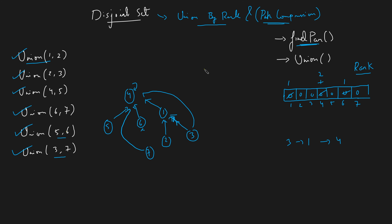The time complexity of both find parent and union operations is O(4α), which is mathematically proven to be almost constant time. So for M operations, you're doing M times constant work. The space complexity is O(N) since we use both a rank array and a parent array.